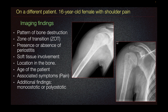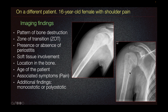Another thing that we look at is the zone of transition between the normal and the abnormal bone. A non-aggressive lesion will have a narrow zone of transition, whereas an aggressive lesion will have a wide zone of transition, where we can't really determine where the normal and the abnormal bone separates.